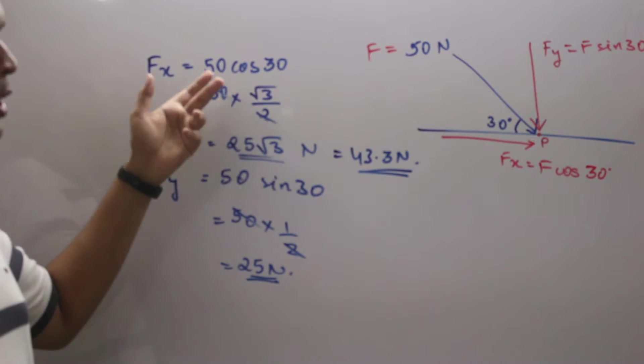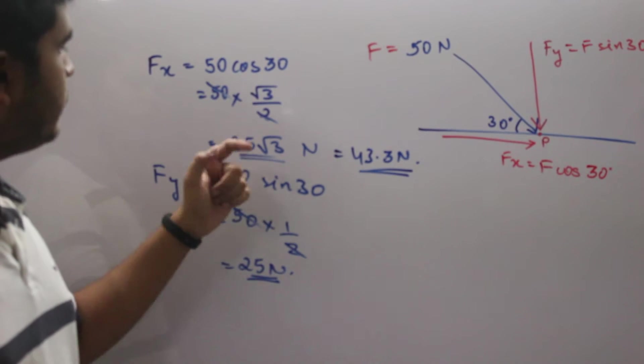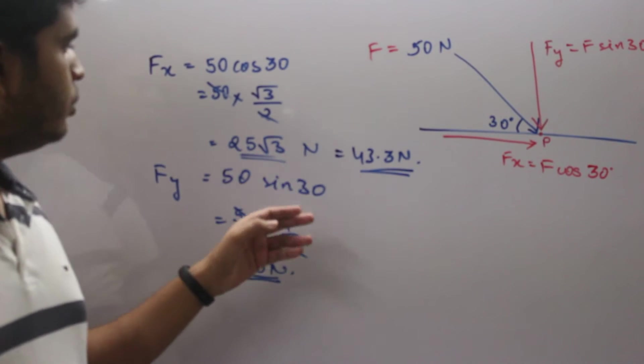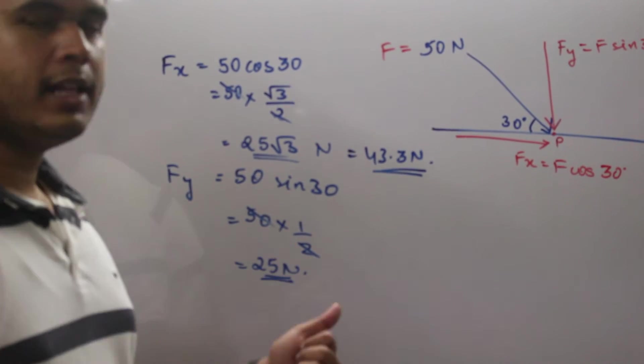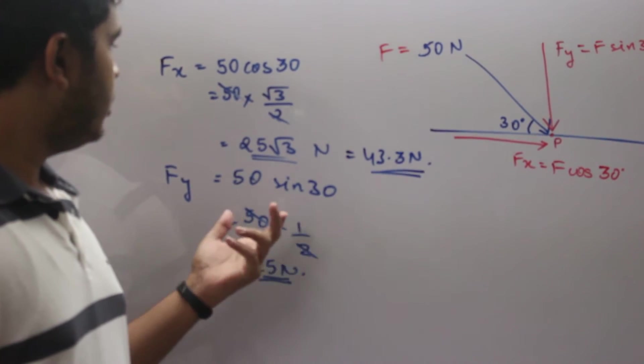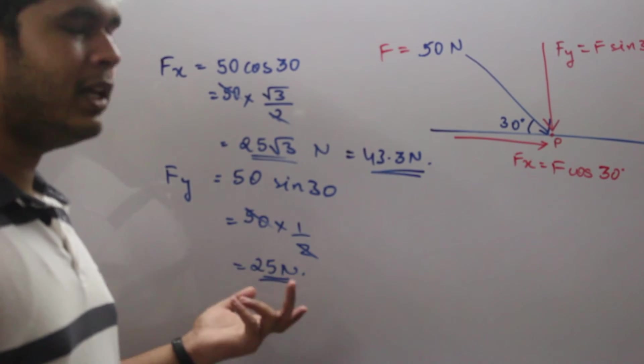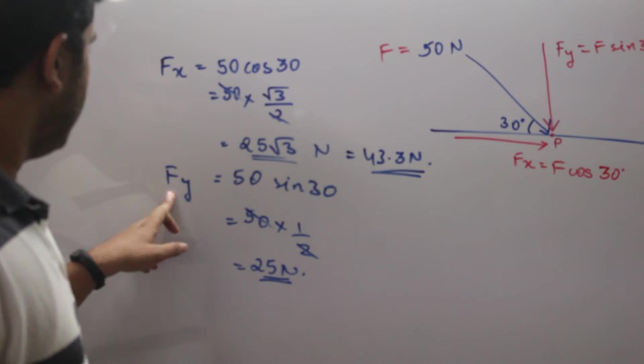On substituting the values we get our answer as 25 root 3. 25 root 3 is equal to 43.3 Newtons. You can use a calculator for calculating the value of root 3 and then multiplying it with 25.